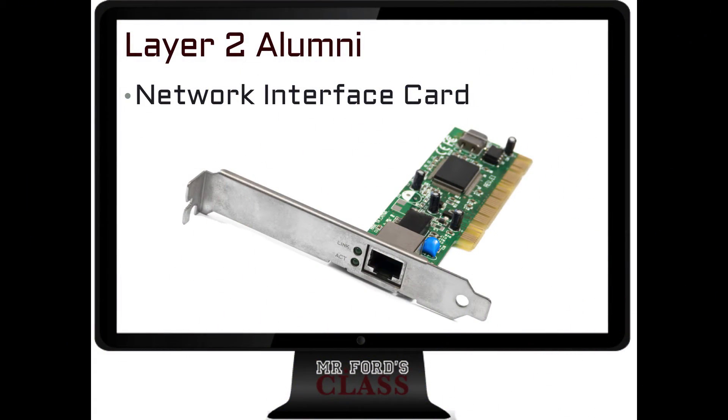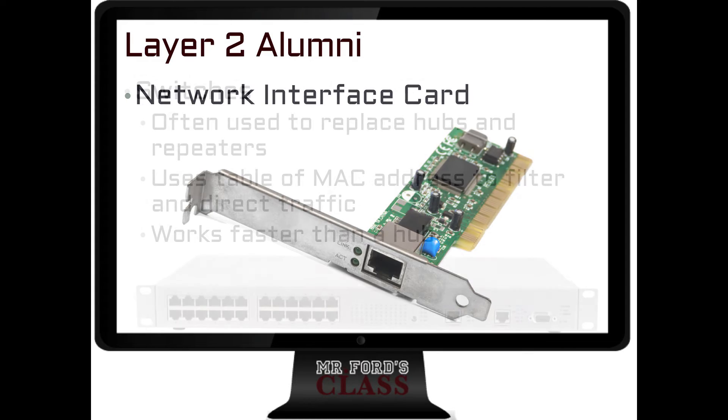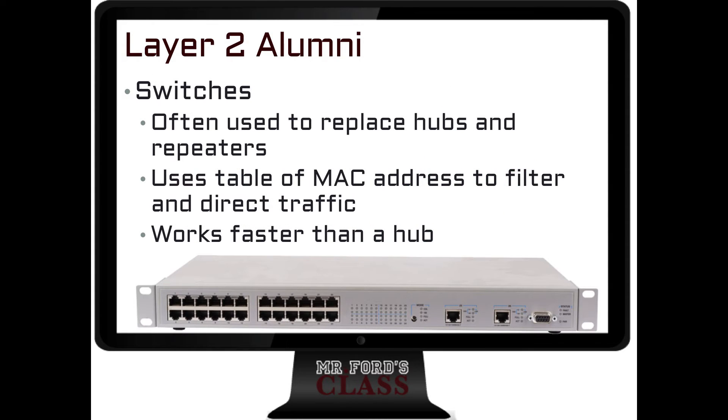Layer 2 devices include the network interface card, the NIC, and switches. Switches are different from hubs — hubs are layer 1, switches are layer 2, and a bit smarter. A hub just repeats information to everybody, while a switch looks for a MAC address and sends the data packet only to the correct recipient. Switches have largely replaced hubs. They work faster and lessen network traffic by creating network segments rather than broadcasting to everyone.